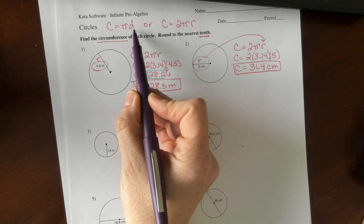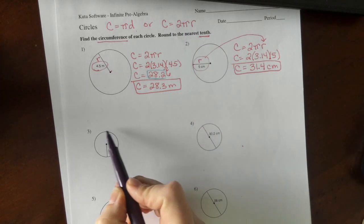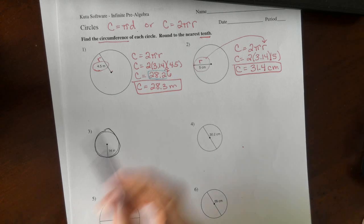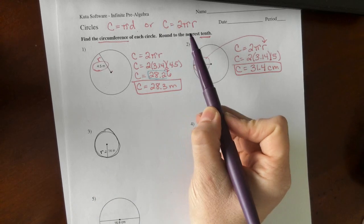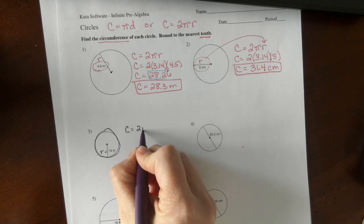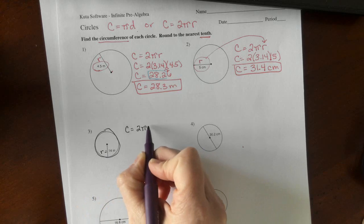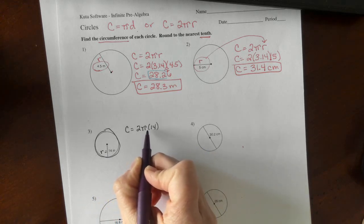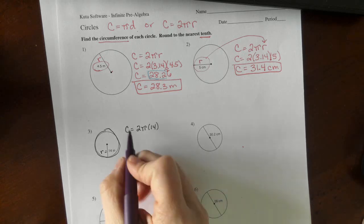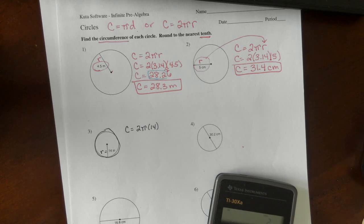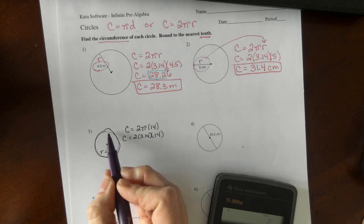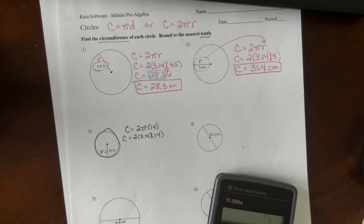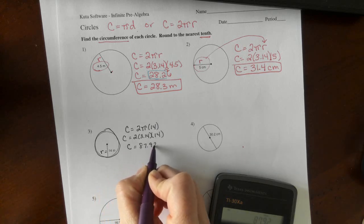Circumference is pi times diameter, or 2 times pi times radius. Here I'm looking for the circumference of this circle. Since I know the radius is 14, I'm going to use this formula. C equals 2 times pi times 14. 2 times 3.14 times 14 is going to give us the distance around our circle. My circumference is 87 and 92 hundredths inches.